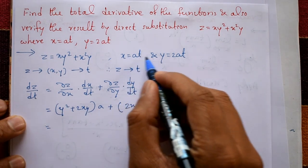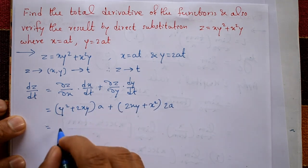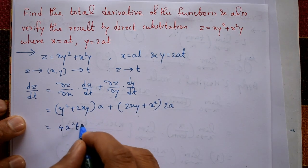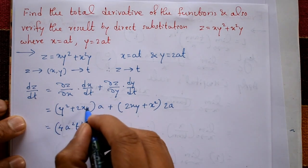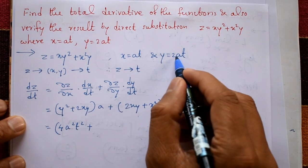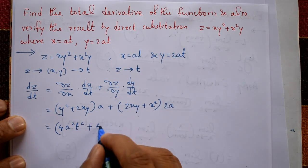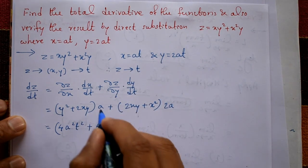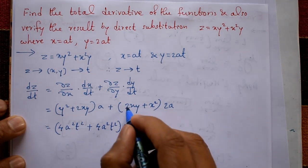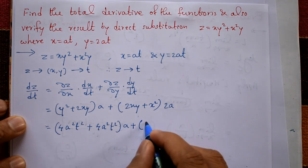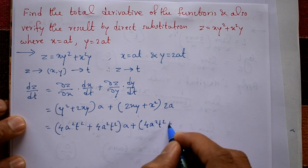Now substituting x = at and y = 2at: y² = 4a²t², and 2xy = 2·(at)·(2at) = 4a²t². So the first bracket becomes (4a²t² + 4a²t²)·a, and the second term has 2xy = 4a²t² plus x² = a²t², multiplied by 2a.